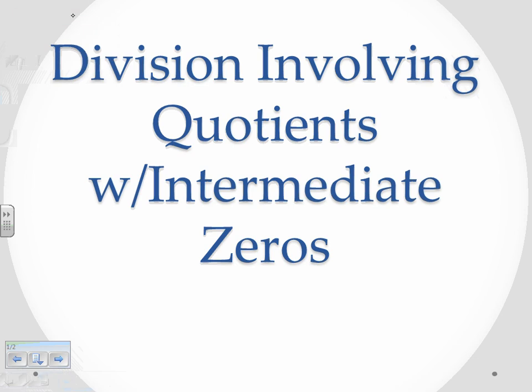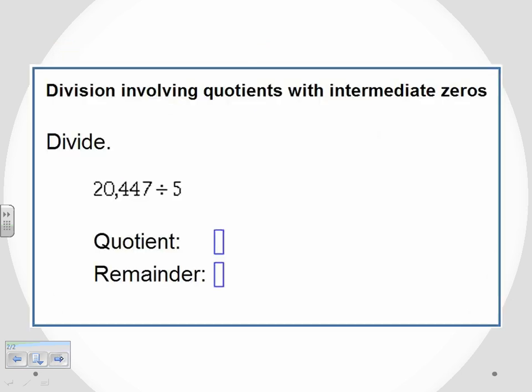Okay, now we're taking a look at division involving quotients with intermediate zeros. So we're dividing with intermediate zeros. The example problem that we have here does have that intermediate zero—it's got that zero in there. So it's written left to right.